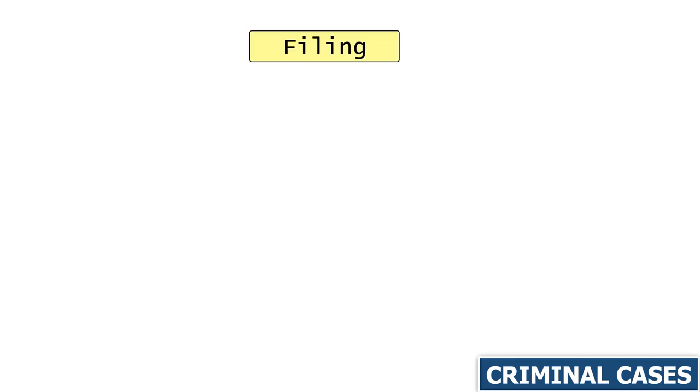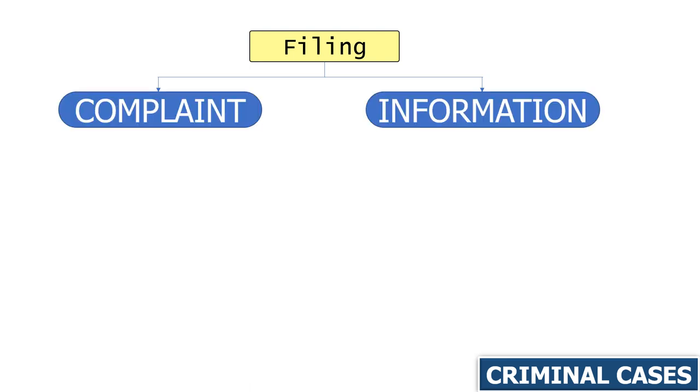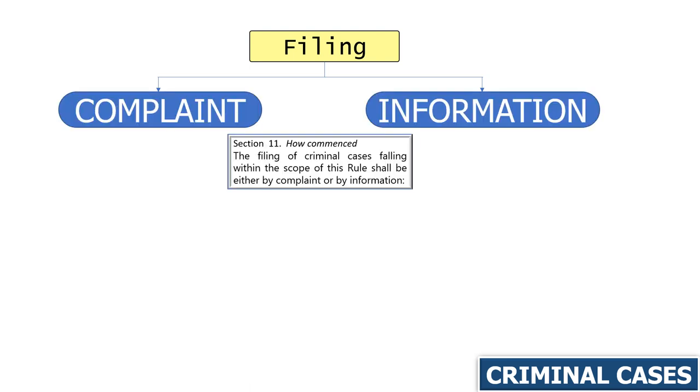We go now to the procedure — the summary procedure for criminal cases. We start with the filing of a complaint or information. That is very clear. According to Section 11, the filing of criminal cases shall be either by complaint or by information.